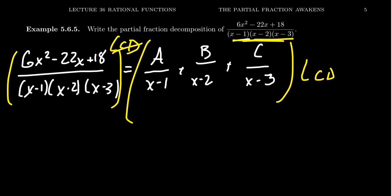On the left-hand side, the least common denominator, which is x minus 1 times x minus 2 times x minus 3, they will cancel leaving just the numerator: 6x squared minus 22x plus 18.